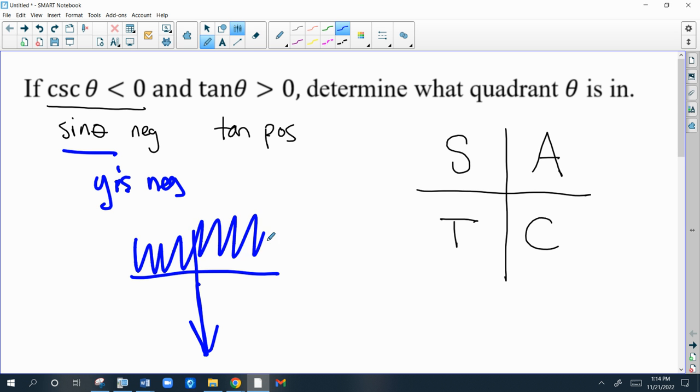So tangent is positive. And since tangent is a combination, a quotient of sine and cosine, the only way tangent is positive is if x and y are both positive or x and y are both negative.